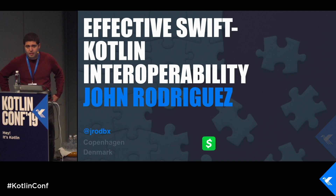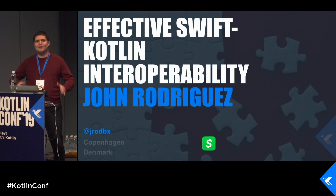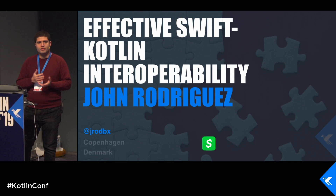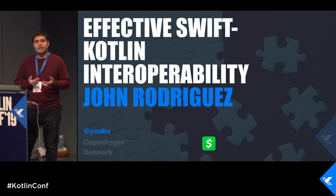My name is John Rodriguez. I work at Square on the Cash App team. We do peer-to-peer financial services and payments. I'm going to be talking about effective Swift-Kotlin interoperability today.